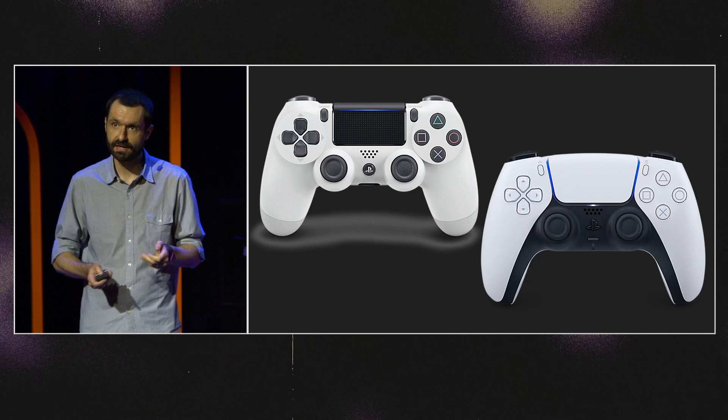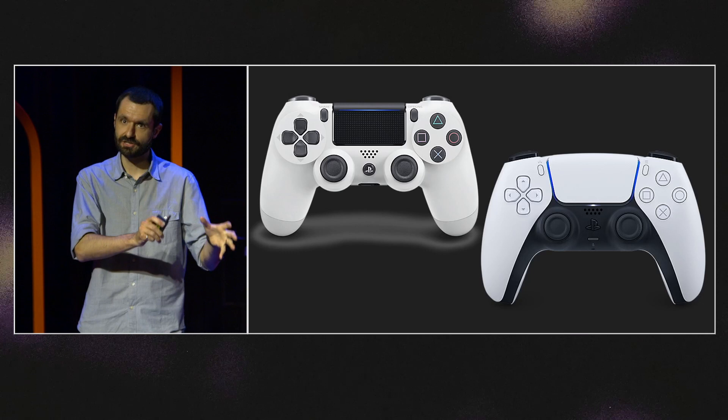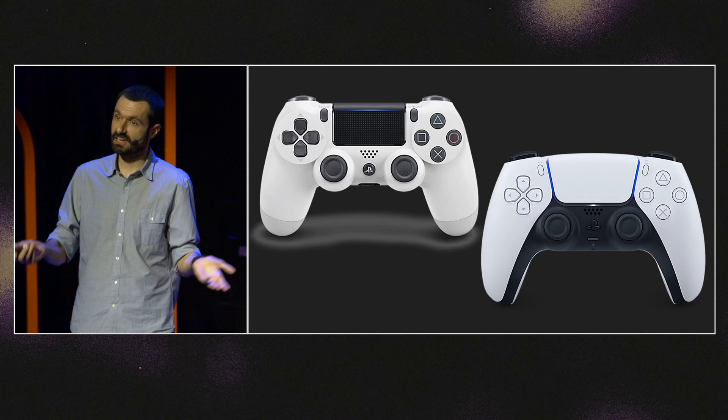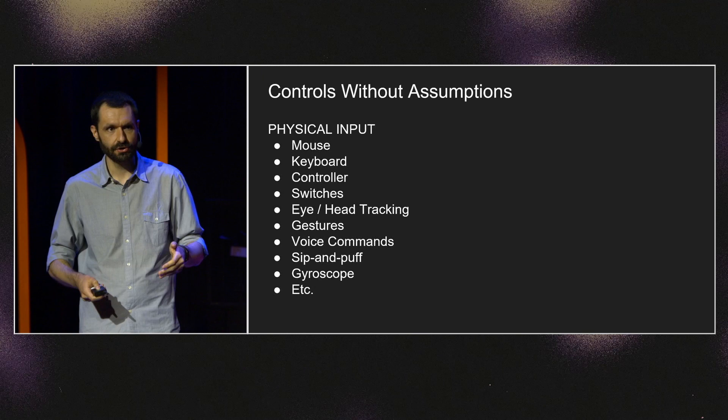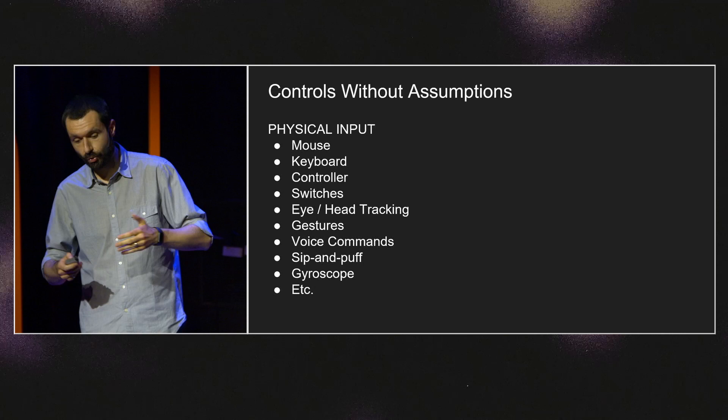One of the implicit assumptions of a controller, especially in a console game, is that when the game receives a button input, that input is coming from a physical button. That isn't necessarily true on a PC, which supports a vast range of input devices — not only the more standard mouse and keyboard and controller, but also things like head switches or sip and puff devices.